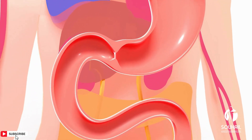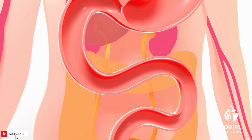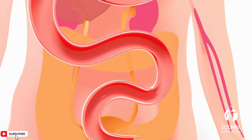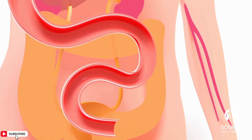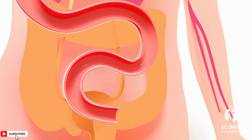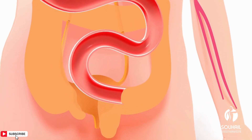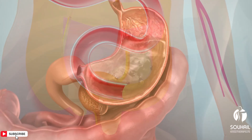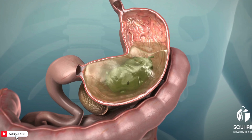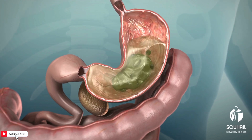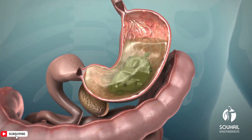Stomach. The stomach is a muscular organ that further breaks down food mechanically and chemically. Gastric juices containing enzymes and acids help to digest proteins and kill bacteria present in the food.